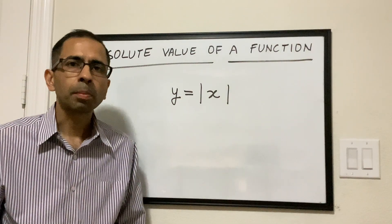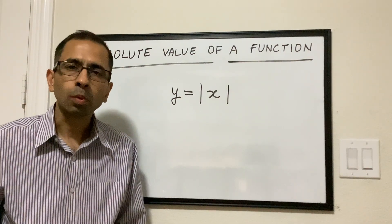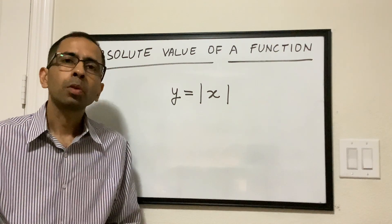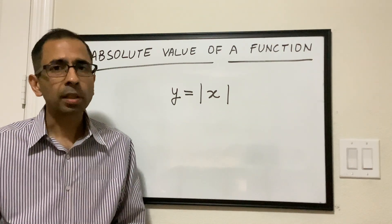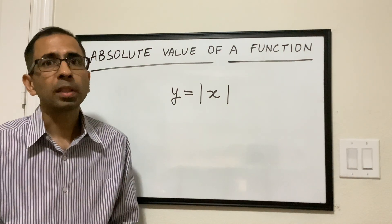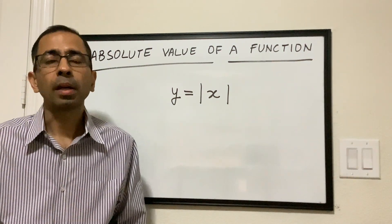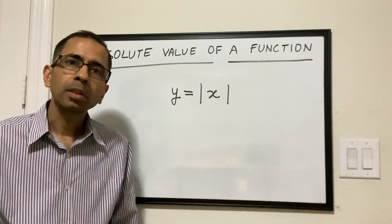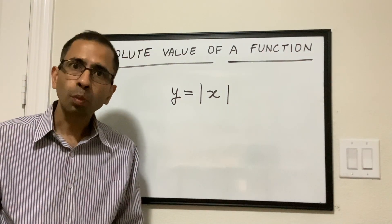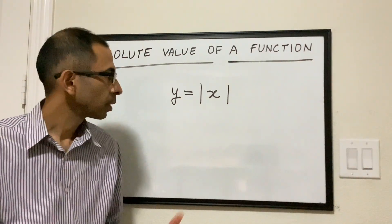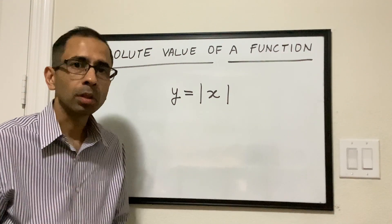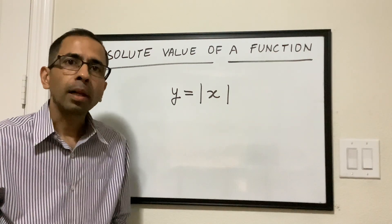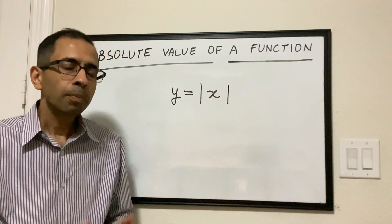Hello all, welcome to the 10th episode of introduction to functions. In this session we are going to talk about a special type of function called an absolute value function. Absolute value function is denoted by two vertical bars as we see on the book. Let's understand what this function is all about.